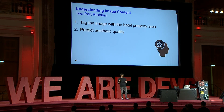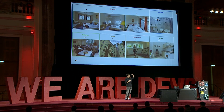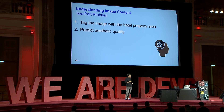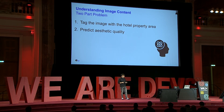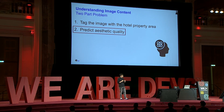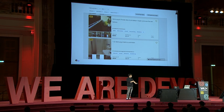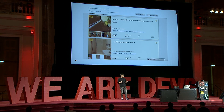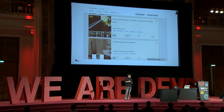The problem is twofold: we want to categorize images — bedroom, bathroom, etc. — and then predict aesthetic quality. I won't cover the first one in detail since image classification is not very novel anymore. The second topic is more interesting and we solve it with deep learning. And it's scalable — we're a very large group with many companies that use images, so solving this once benefits many.